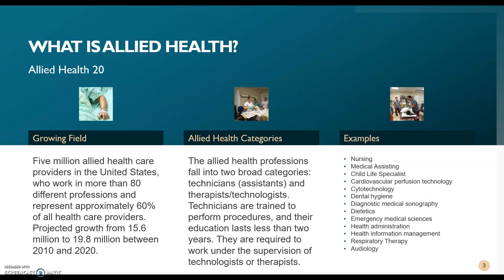There are 5 million allied healthcare providers in the United States. They work in more than 80 different professions and represent about 60% of all healthcare providers — that's over half. The projected growth is from 15.6 million to 19.8 million between 2010 and 2020. It's one of the most rapidly growing fields, making it a high need, high wage field.